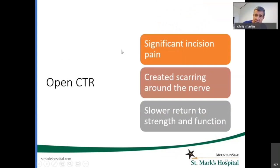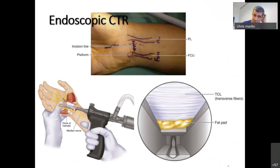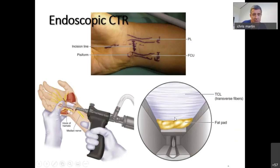Open carpal tunnel syndrome had significant incisional pain, much longer times back to work, much more scarring created around the nerve, and just in general a much slower return to doing things. Historically, people then started to do an endoscopic carpal tunnel release. This is a device where we're basically looking at a camera — the tray goes underneath the ligament, and we know we're at the end of the ligament when we get to this fat pad. This blade, once we're there, pops up, and then we drag the endoscope back out of the carpal tunnel, cutting this ligament as we go.